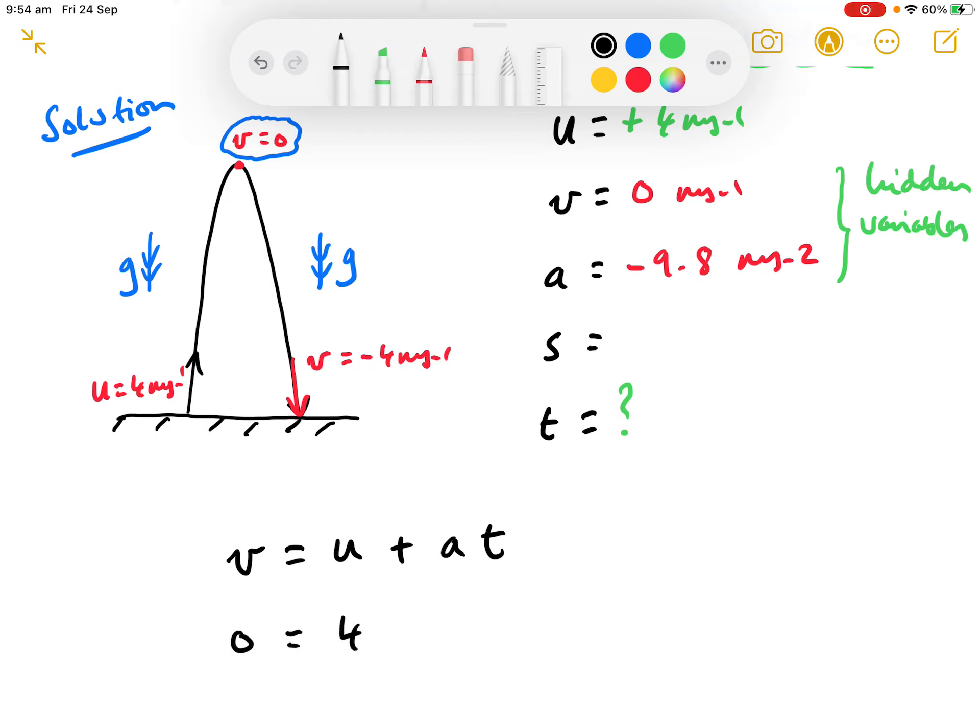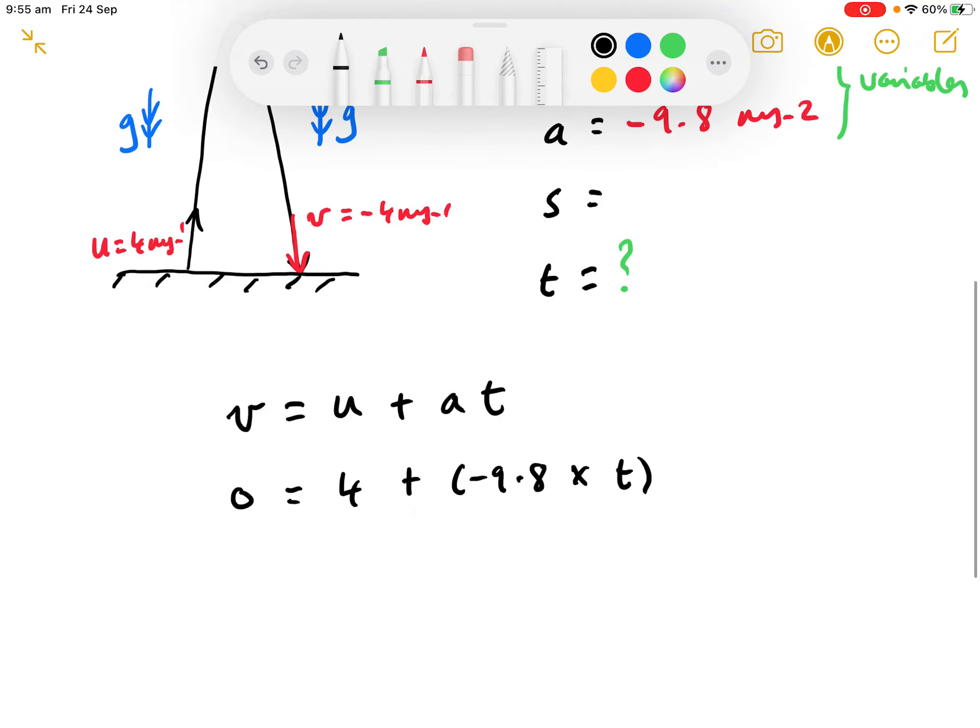0 equals 4 plus, now it's minus 9.8. Remember, projectile type problems like this, and equations of motion problems generally, you do need the sign convention, because the direction changes is what's important. So, that's times whatever t is.